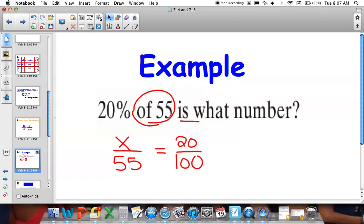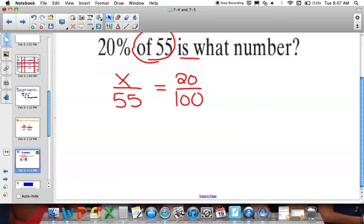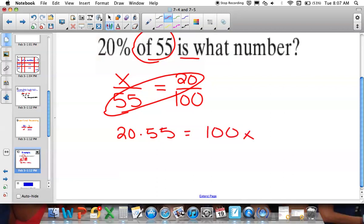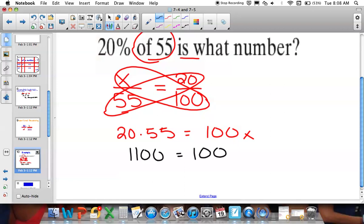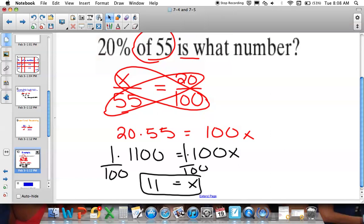The cross products property. So, we multiply 20 by 55. And set it equal to 100 x. Didn't mean to erase that. So, it's equal to 100 x. And I'm going to multiply 20 by 55 in my calculator. So, I get 1100 is equal to 100 x. Multiply by the reciprocal. Which means we're left with 11 is equal to x.